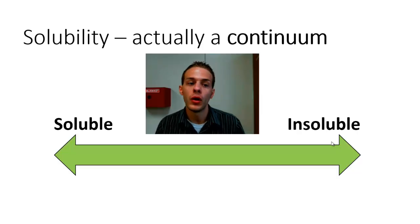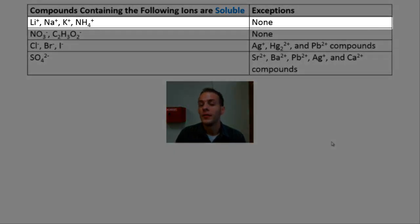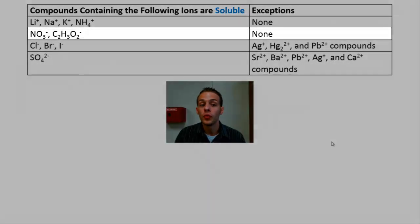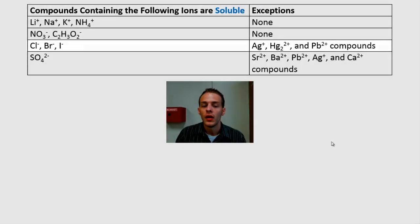Let's go through the solubility rules one by one. The first table covers ionic compounds that are generally considered soluble. The first rule: if the compound contains lithium, sodium, potassium, or ammonium ion, it will always be soluble with no exceptions. The next rule covers nitrates and acetates — if the compound contains nitrate or acetate ion, it will always be soluble with no exceptions.